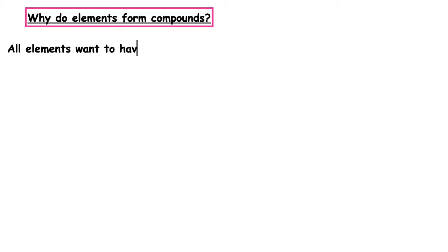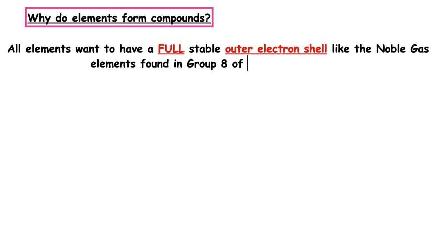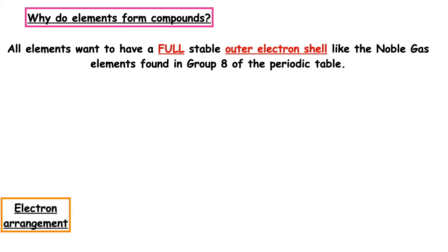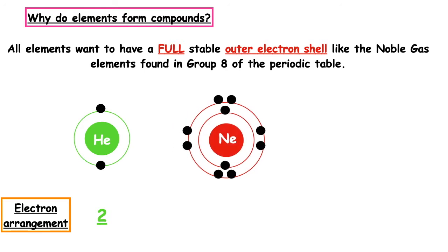All elements want to have a full, stable outer electron shell, like the noble gas elements found in Group 8 of the Periodic Table. What we're focusing on is the energy levels and the maximum number of electrons that can occupy that energy level. If the outermost occupied energy level is the first energy level, it can hold and wants to achieve a maximum of two electrons. If the outermost energy level is the second energy level, it wants to achieve and hold a maximum of eight electrons.